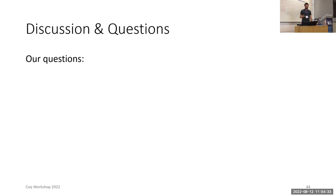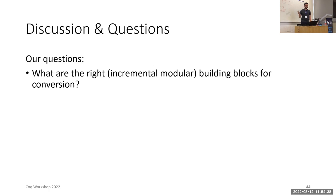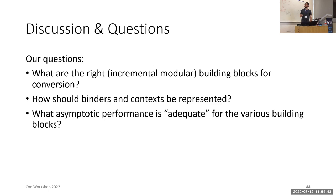Our questions: what are the right incremental modular building blocks for conversion? How should binders and contexts be represented? What asymptotic performance is even adequate for the various building blocks? These are some sort of starter questions that we have. So, what are your questions? Thank you.